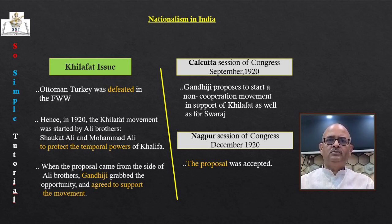Many leaders within Congress did not want to boycott council elections scheduled for November 1920, causing intense debate. Finally, at the Congress session in Nagpur in December 1920, the program of non-cooperation and Khilafat movement was adopted. Non-cooperation means refusing to cooperate with the government in any manner. The non-cooperation movement began in January 1921, with various social groups participating in response to the call of Swaraj.